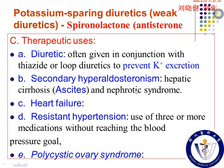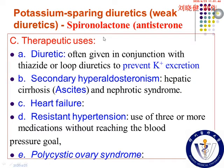Patients with hepatic cirrhosis usually have the complication of ascites, which is a specific edema in this disease. And sometimes with nephrotic syndrome, patients also have relatively serious edema. So for these two conditions, using spironolactone to relieve edema is very helpful.